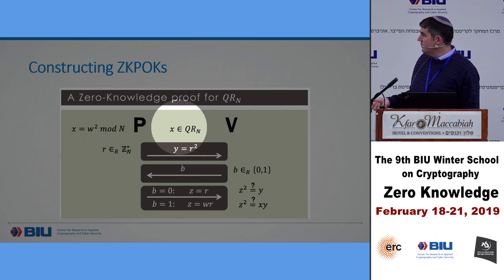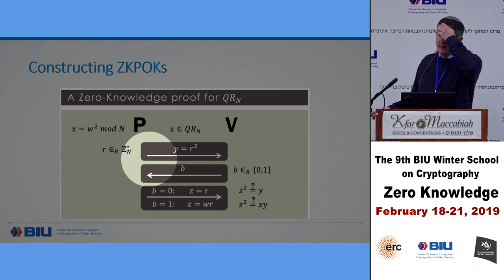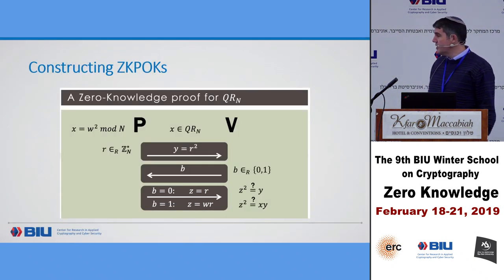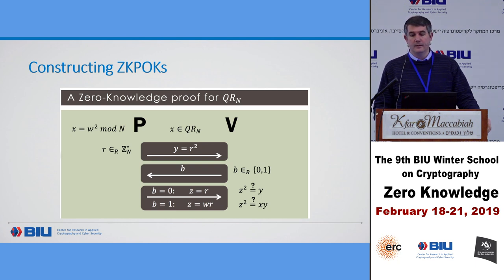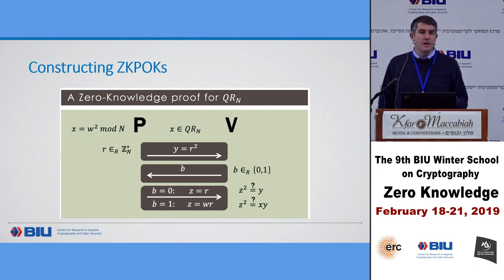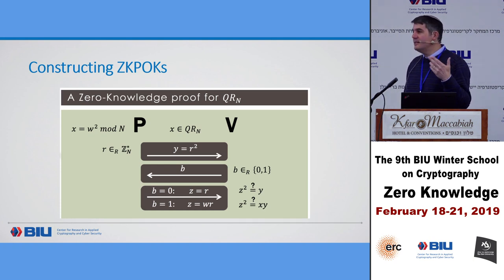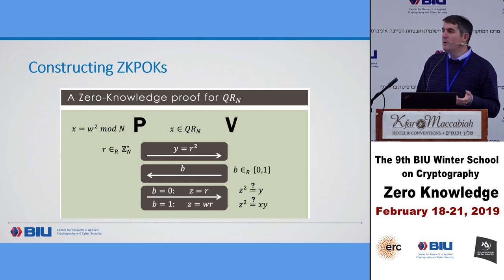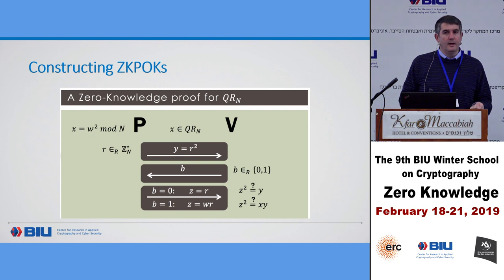The prover chooses a random r, sends y = r squared. The verifier sends a bit b. The prover either opens r or opens r times w. The verifier checks either that z squared equals y, or z squared equals x times y. The idea behind soundness is that if x is not a quadratic residue, there would be no way to answer query b=1. If you sent y as a quadratic residue you can answer b=0 but not b=1; if y is a non-quadratic residue you cannot answer b=0.